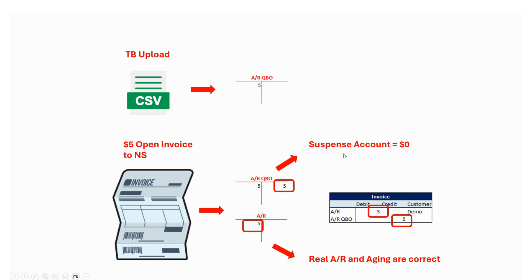In addition to allowing you to not incorrectly affect your aging report, those suspense accounts will also serve to let you know if you uploaded incorrect balances. For example, if I uploaded five dollars in the trial balance but with the open invoices I only uploaded four dollars, at the end I will have in my balance sheet a suspense account with a one dollar balance — so it will let you know if something went wrong with the data migration.